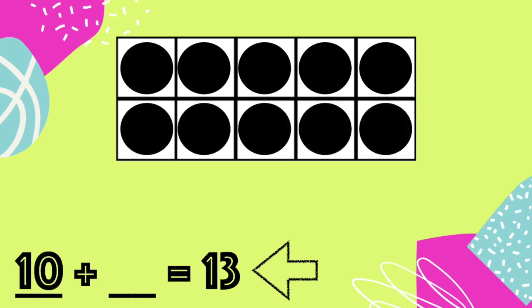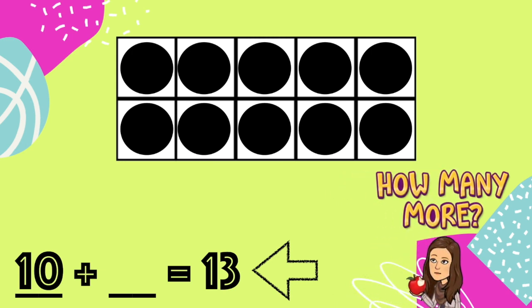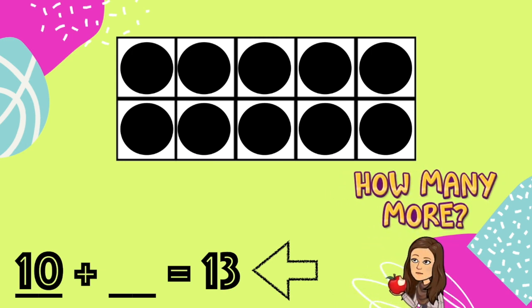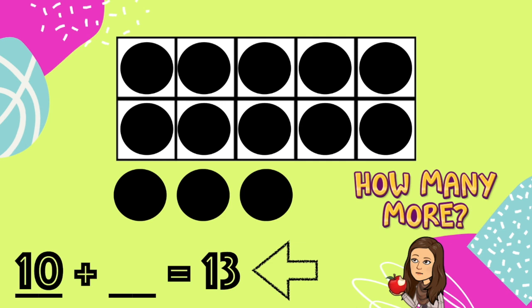We have 10, but we need to ask ourselves, how many more do we need to get to 13? How do you think I can figure this out? You're right, I'm going to start at 10 and count on. 11, 12, 13. How many more did I add to get to 13? I added three more counters. 10 plus 3 equals 13.